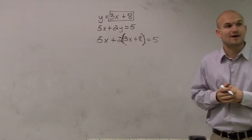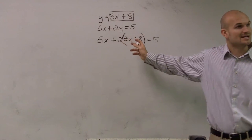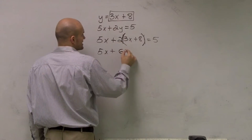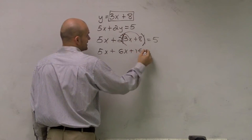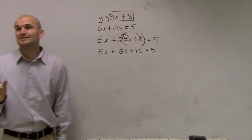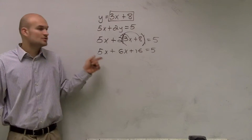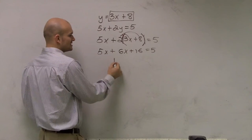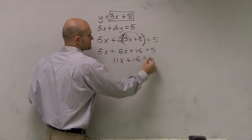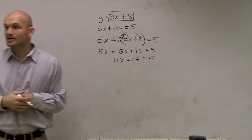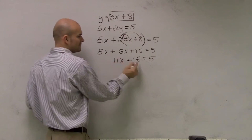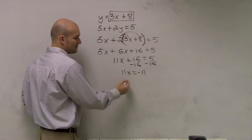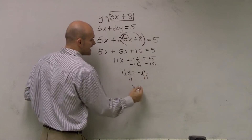Now I simplify using the distributive property: 5x plus 2 times 3x is 6x, and 2 times 8 is positive 16, equals 5. Combine like terms: 5x plus 6x is 11x, plus 16 equals 5. Subtract 16 on both sides to get 11x equals negative 11. Divide by 11, and x equals negative 1.